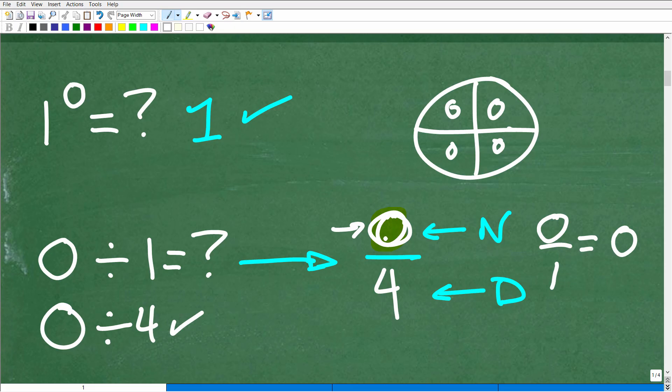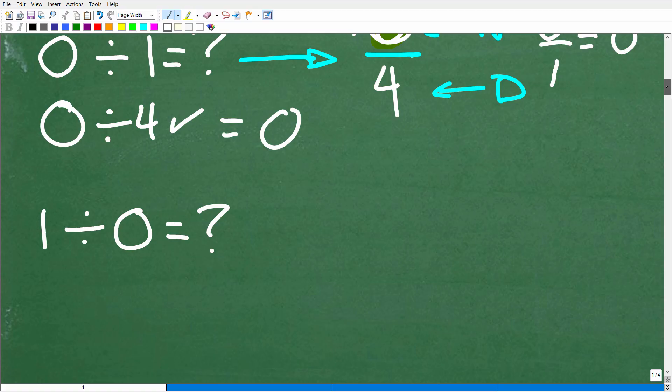So, again, when zero is the numerator, or zero divided by one, or zero divided by four, the answer will be zero. Okay, so let's go ahead and take a look at our last situation here.